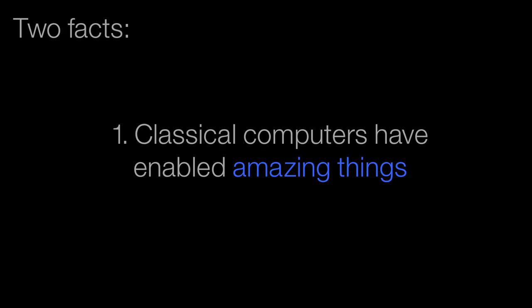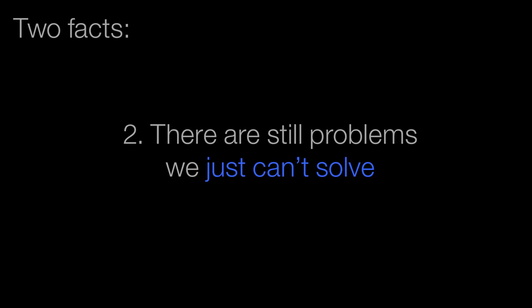I want to start with two facts. Fact number one: classical computers have enabled amazing things — the internet, air travel, the electronic giraffe outside blaring music. Classical computers have enabled just amazing things, but one of the things we don't often talk about is all the things they can't do. There are so many things they can't. I want to start with two examples of things classical computers are really bad at — they can solve small versions but by the time the problem gets big enough to be interesting, we run out of computing horsepower.